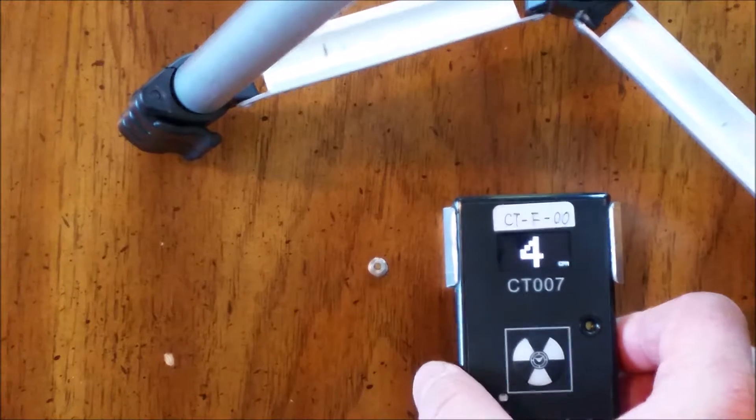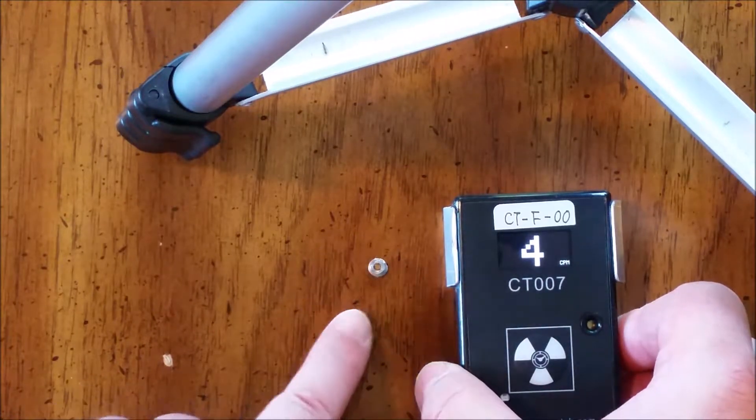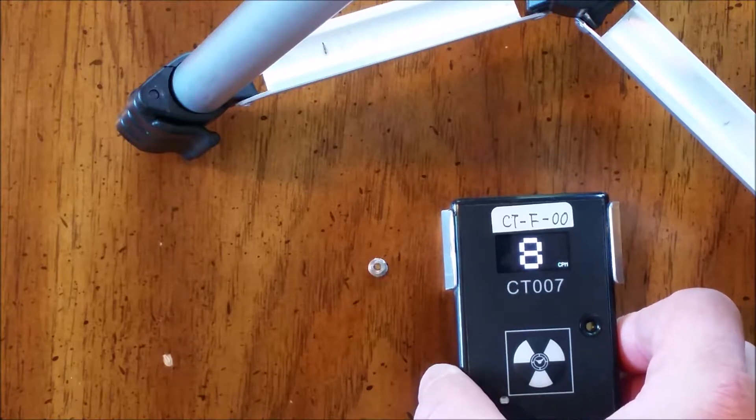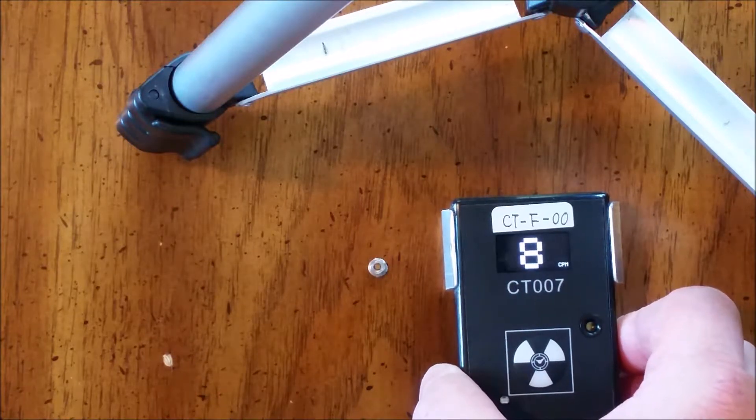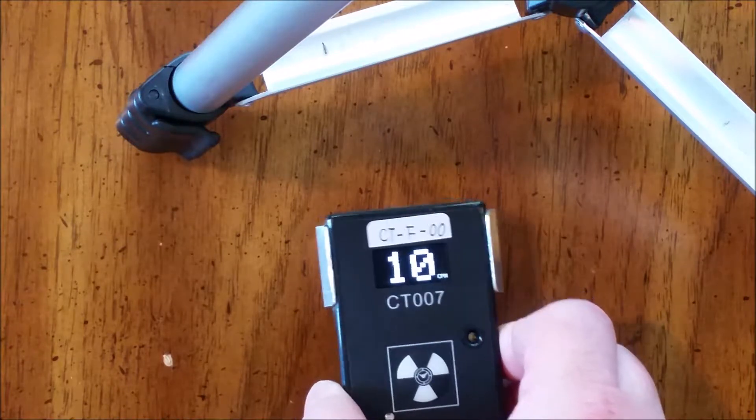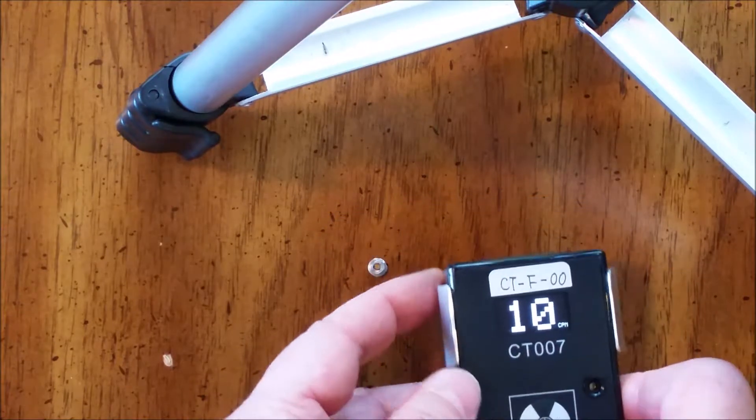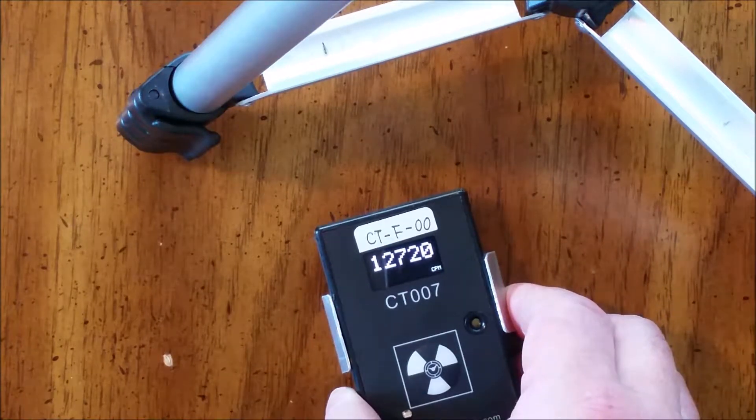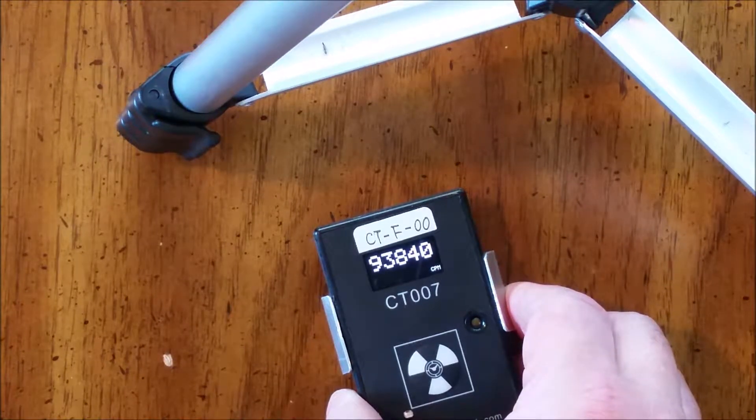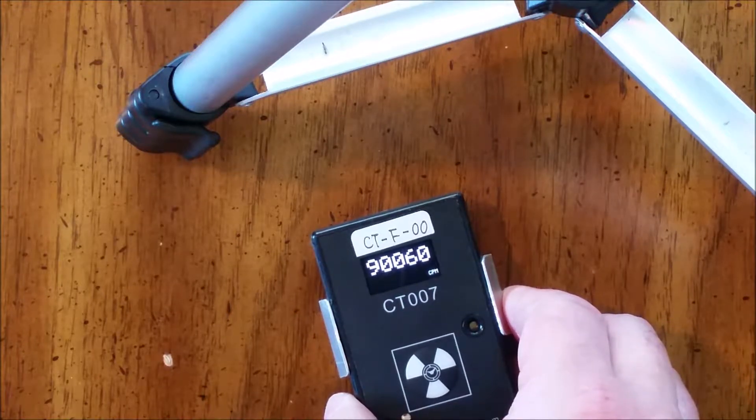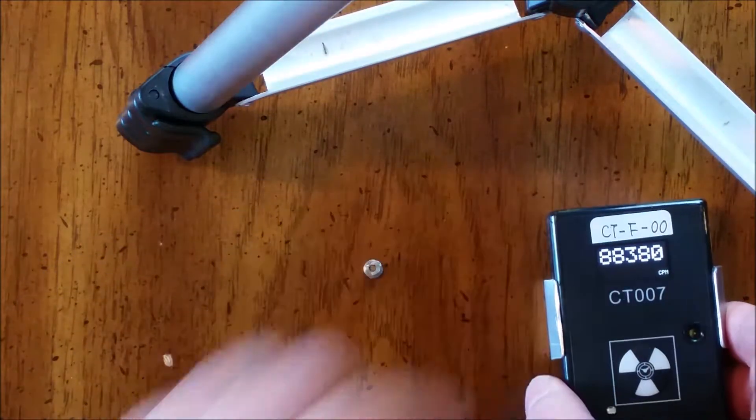For another demonstration we'll use the source from a smoke detector. With the window closed we get pretty much nothing but with the window open we get 100,000 CPM right away. That's because this is an alpha source.